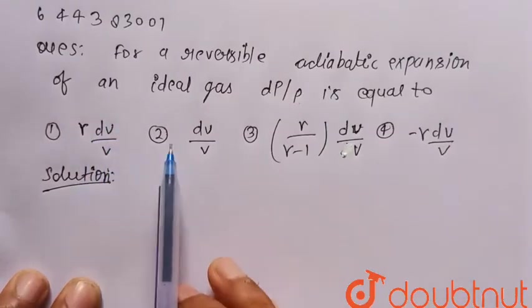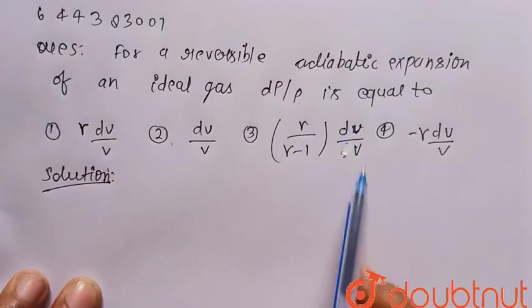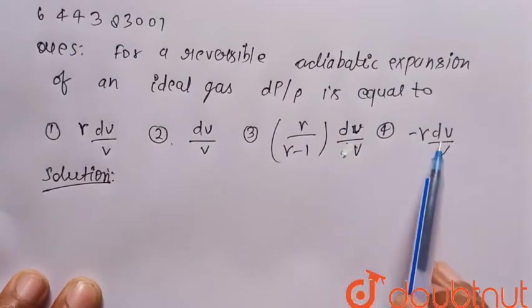First one is gamma dV by V. Second is dV by V. Third is gamma upon gamma minus one into dV by V, and fourth is minus gamma dV upon V.